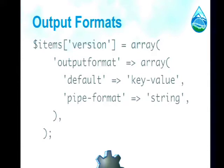Dash-dash-pipe exists on most commands. It's a handy way to get machine-readable output without having to think about what format you want — just give it to me in a format that makes sense. For the version command, passing --pipe would be the equivalent of passing --format equals string.